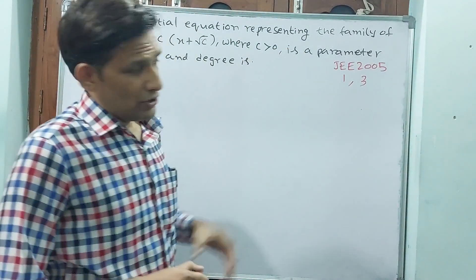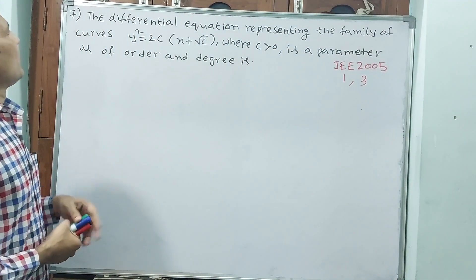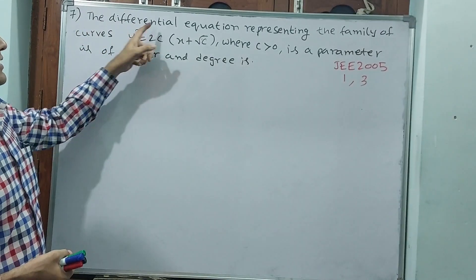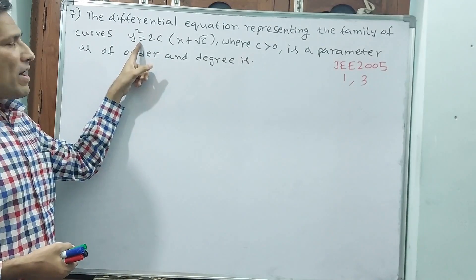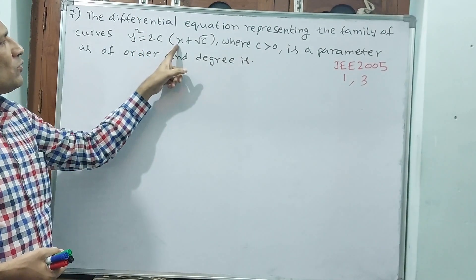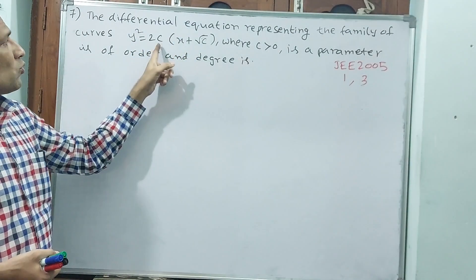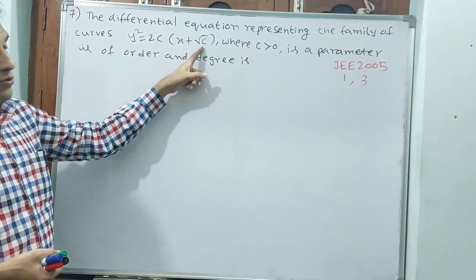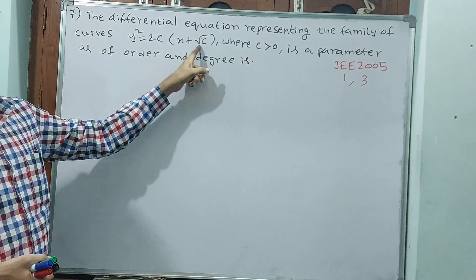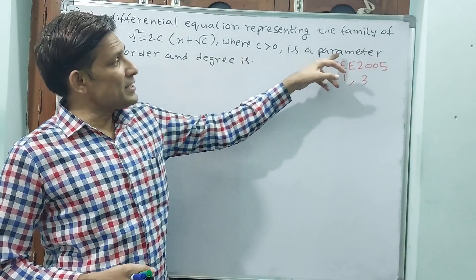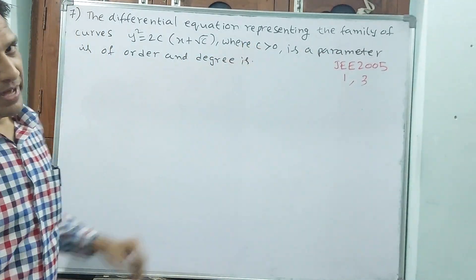Let us see these questions one by one. Question number 7: the differential equation representing the family of parabolas y² = 2c(x + 2c) + √c. See here, 2c appears twice, where c > 0 is a parameter. That means we have to solve for c and substitute.